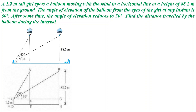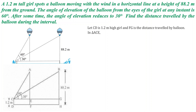We will have two different triangles: one is ACE and another is BCG. What we need to determine is the distance EG — that is the distance traveled by the balloon during the interval when the angle of elevation changes from 60 degrees to 30 degrees. We have considered that CD represents the girl, and EG is the distance traveled by the balloon.